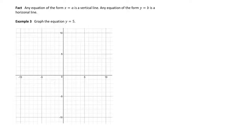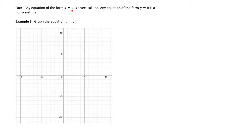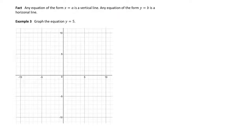In example three, I want to graph the equation y equals five. This doesn't look like any of the previous equations, but here's an important fact: if you have an equation of the form x equals a number, that's going to be a vertical line, whereas if you have y equals a number, it's going to be a horizontal line. So for this one, I'm choosing y equals a number, we'll graph it, and see why it is in fact a horizontal line.